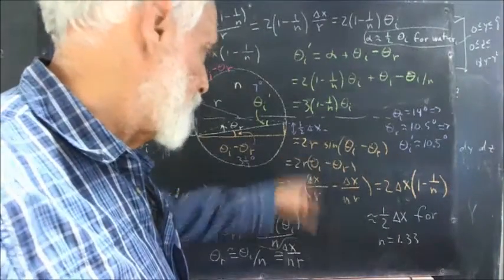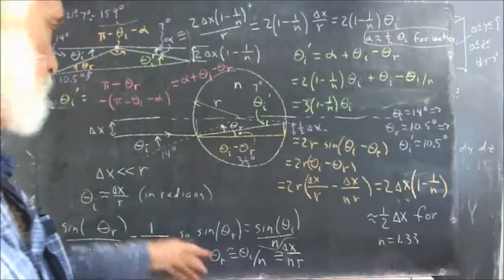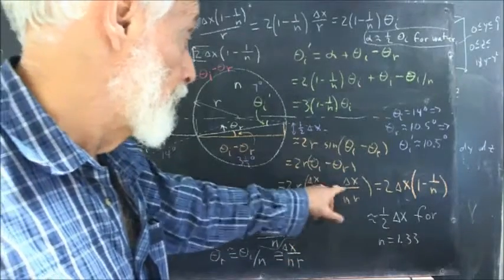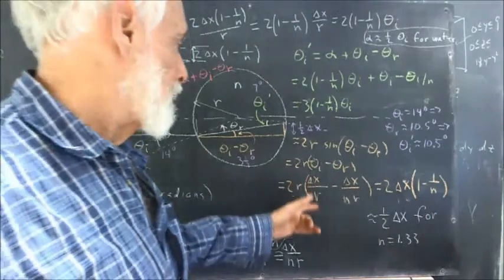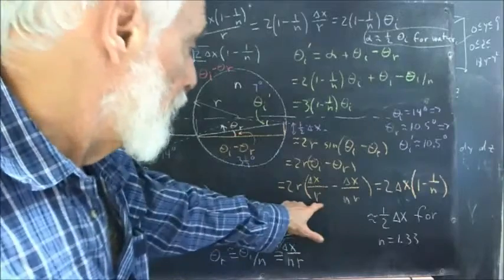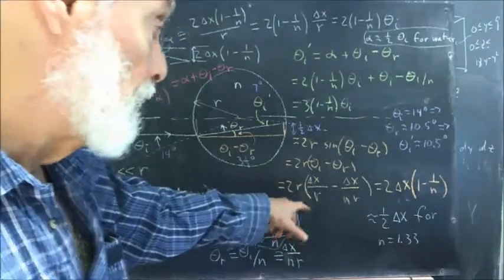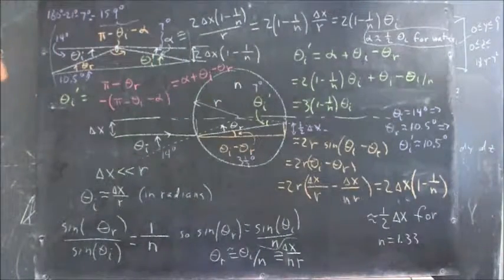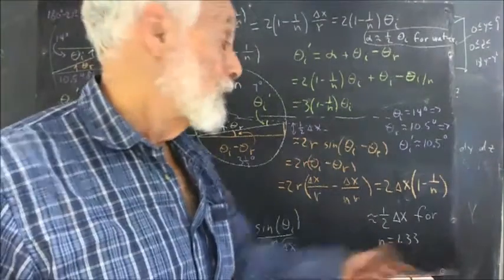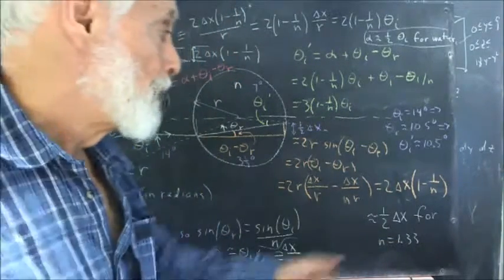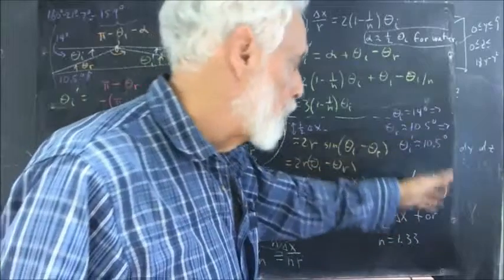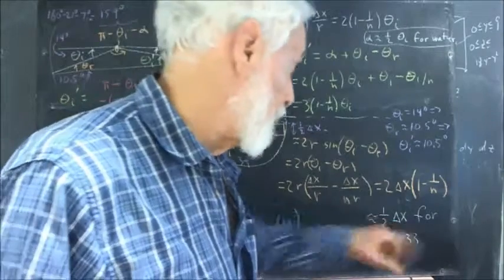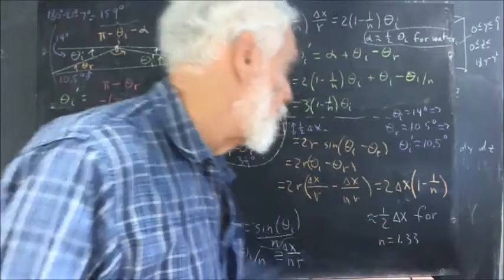Theta sub i is delta x over r, and theta sub r is delta x over nr. We factor out delta x over r, and end up with 2 delta x times (1 minus 1 over n). For water, where n is 1.33, which is very close to 4/3, we get 1 minus 3/4 which is 1/4, giving approximately 1/2 delta x for water.